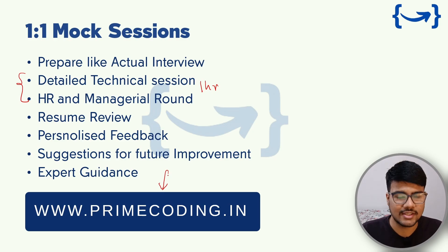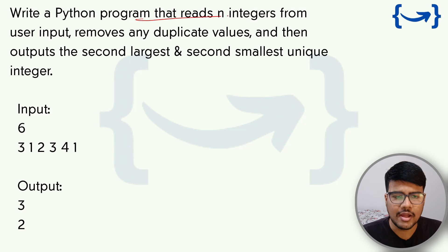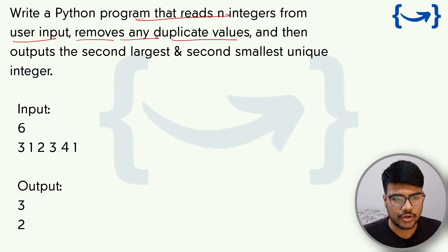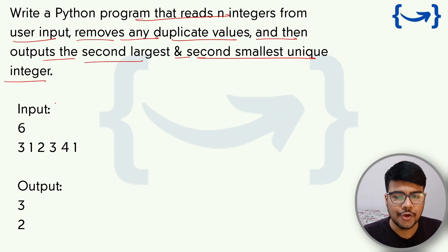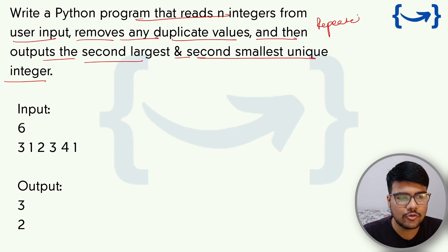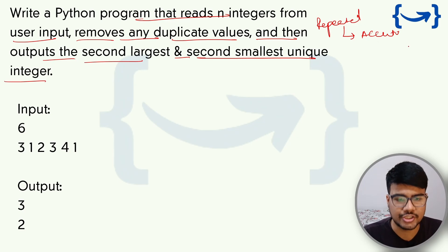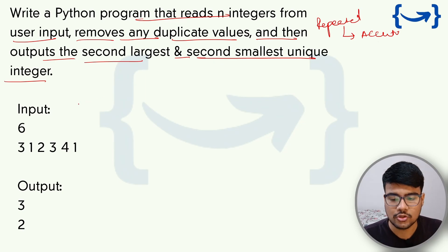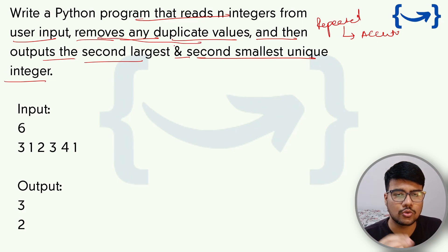Now problem 2: write a Python program that reads integers from user input, removes any duplicate values, then outputs the second largest and second smallest unique integer. This question was asked recently in August as well — it's a repeated question. You can find the same question in the Infosys associate engineer coding sheet, which asks you to find the second smallest and second largest element.